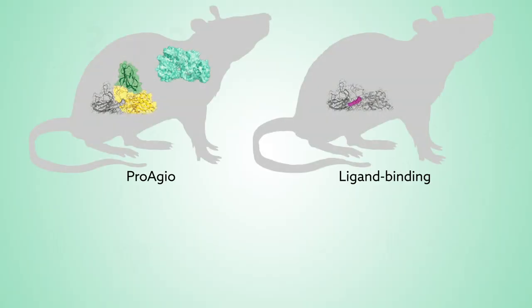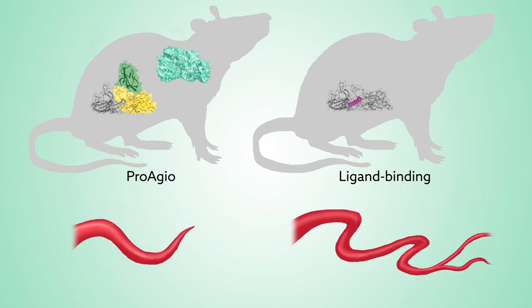Using mouse models, the research team showed that enlisting the help of caspase-8 makes ProAgyos much more effective than ligand binding proteins in preventing the formation of new blood vessels.